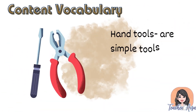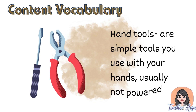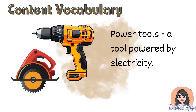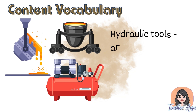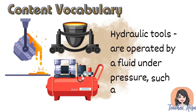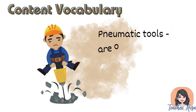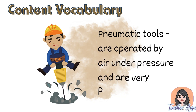For the content vocabulary: hand tools are simple tools you use with your hands, usually not powered. Power tools are tools powered by electricity. Hydraulic tools are operated by a fluid under pressure such as water or oil. Pneumatic tools are operated by air under pressure and are very powerful.